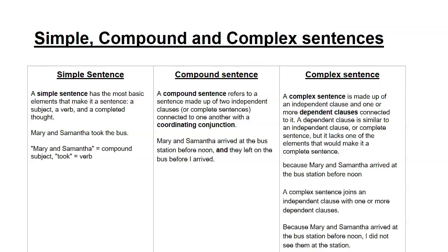A complex sentence is made up of an independent clause and one or more dependent clauses. A dependent clause is similar to a complete sentence but it lacks one of the elements that would make it complete. For example: 'Because Mary and Samantha arrived at the bus station before noon' — this doesn't make sense on its own.